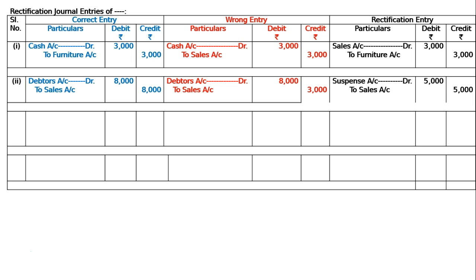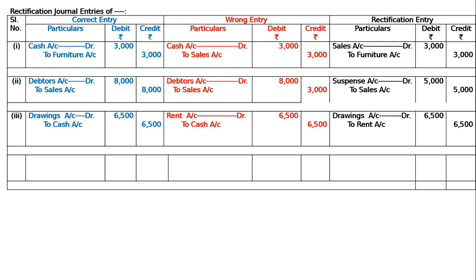Error three — rent of a proprietor's residence of six thousand five hundred was debited to rent account. The correct entry should be drawings account debited to cash account six thousand five hundred. It was wrongly written as rent account debited to cash account six thousand five hundred. To rectify, drawings account is debited six thousand five hundred and rent account credit is cancelled by crediting rent account six thousand five hundred.